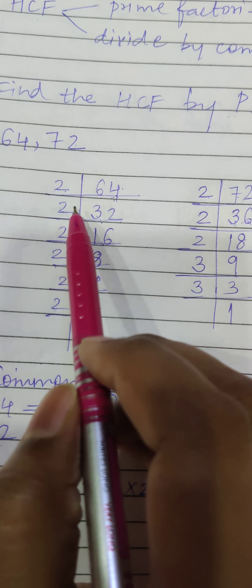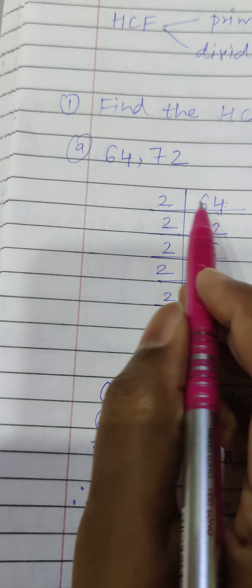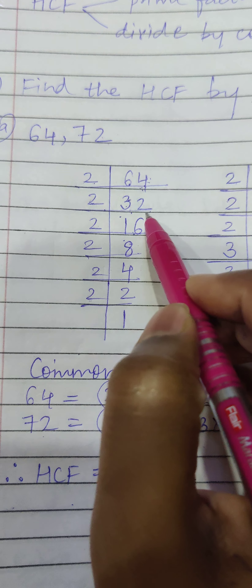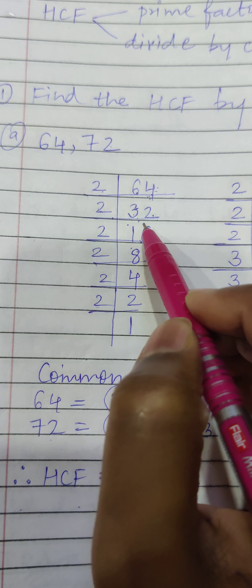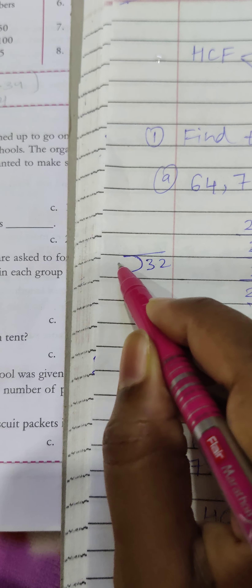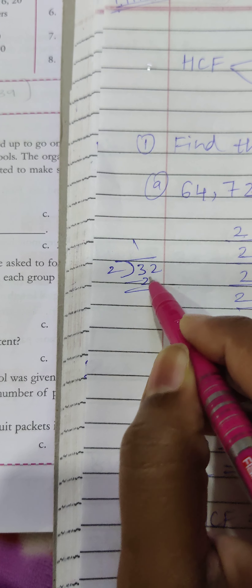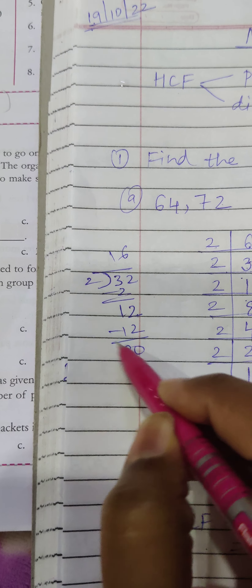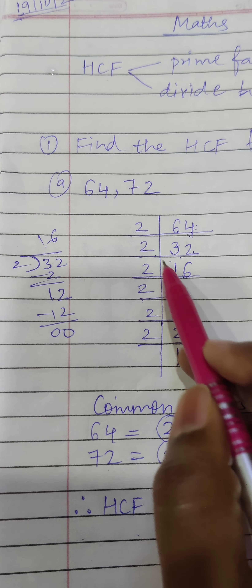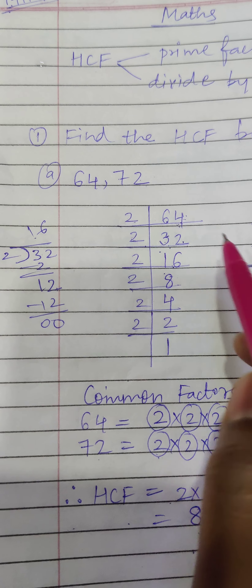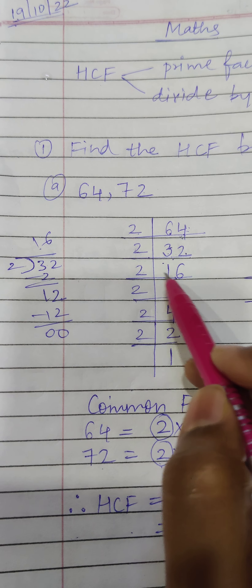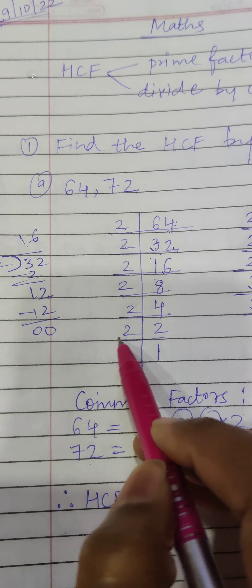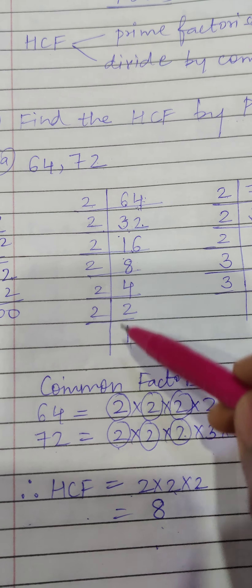You can divide here. Suppose 64 — let me show the division: in the 2 times table, 6 goes with 3 and 4 goes with 2, so we get 32. Now dividing 32 by 2: 2 ones are 2, 3 minus 2 is 1, this becomes 12, 2 sixes are 12, remainder is 0, quotient is 16. Then 16 divided by 2 gives 8: 2 eights are 16. Then 2 fours are 8, 2 twos are 4, 2 ones are 2. This is how we do prime factorization.